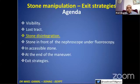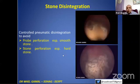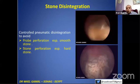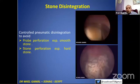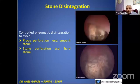Stone disintegration — what are the tips and tricks? First, when you are using pneumatic, especially with a soft stone, you have to hold the probe in your hand — do not put the probe over the stone. Avoid transfixation, especially with a smooth stone like this. The probe will transfix the stone, and once this occurs, it will lead to bleeding.